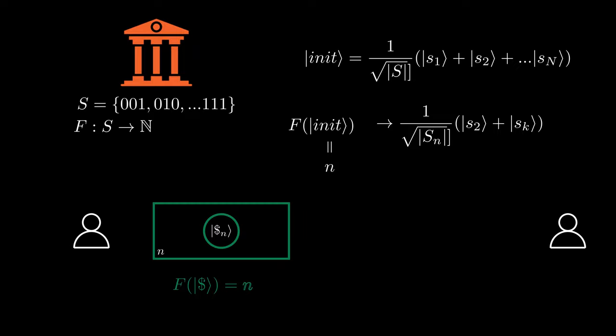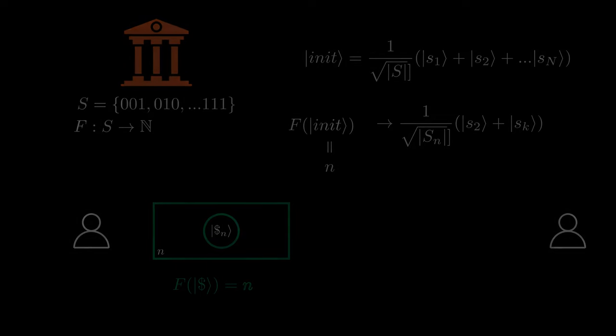And due to the no-cloning theorem, Alice can't make copies of her bill. Recent papers utilizing knot theory, lattices, and quaternions to generate workable quantum states have emerged.